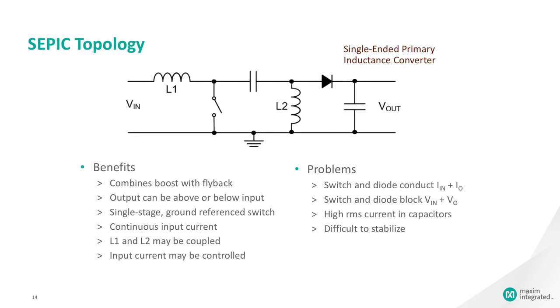The single-ended primary inductor converter, or SEPIC, is a type of DC-to-DC converter allowing the voltage at its output to be greater than, less than, or equal to that at its input. The output of the SEPIC is controlled by the duty cycle of the control transistor.